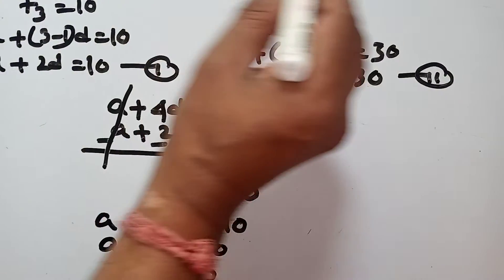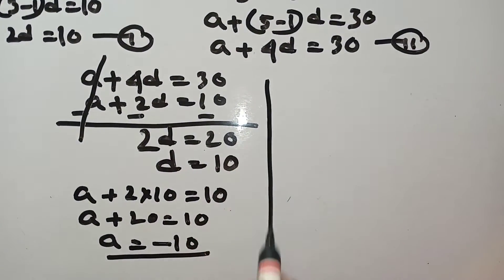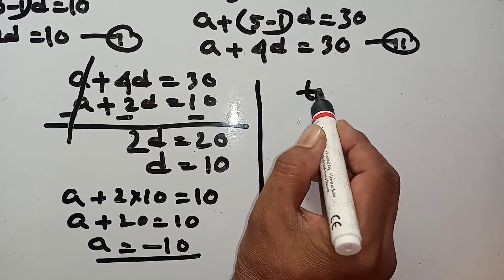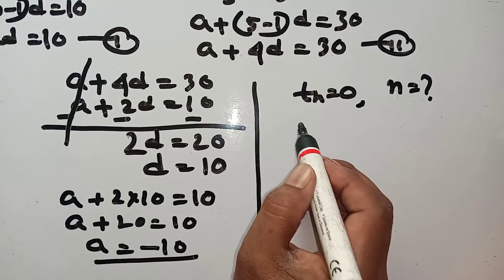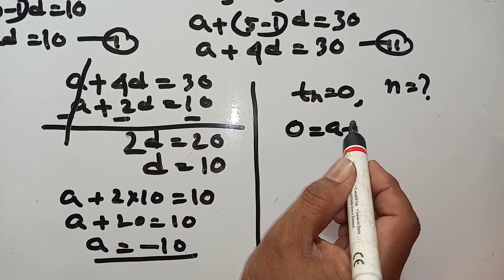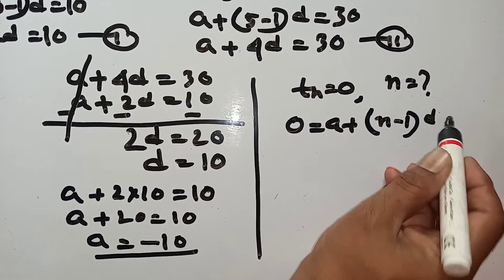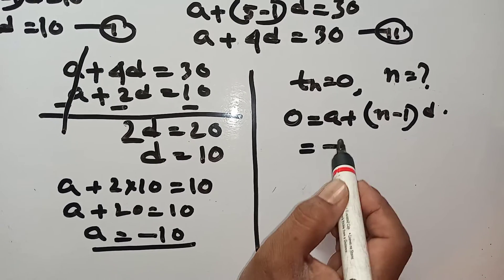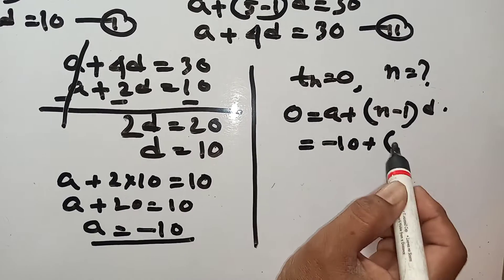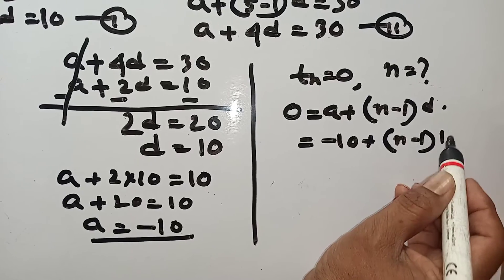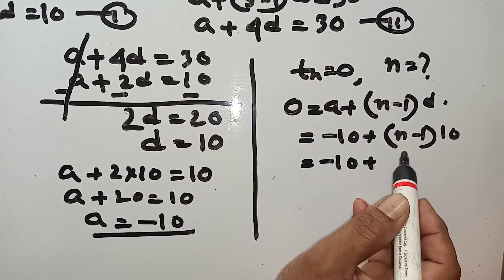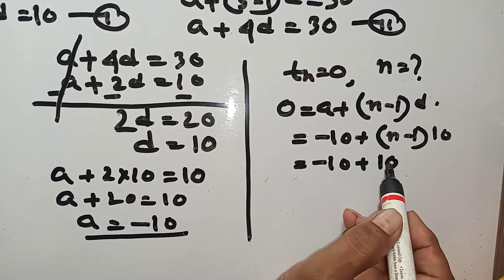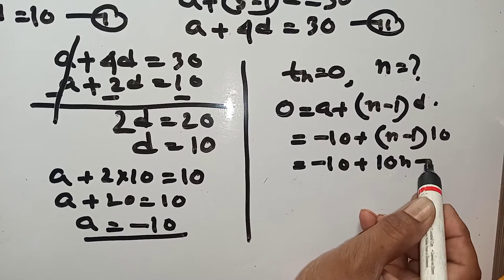Now which term becomes 0? That means TN equal to 0, find N. 0 equal to A plus N minus 1 into D. A means minus 10, N minus 1 into 10. Minus 10 plus 10N minus 10.